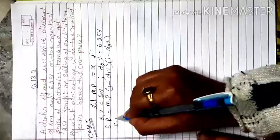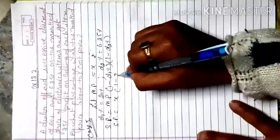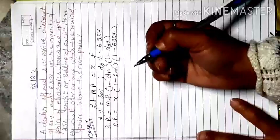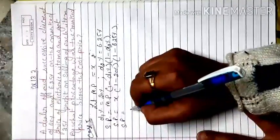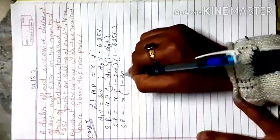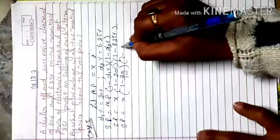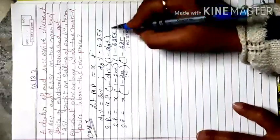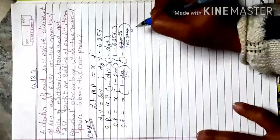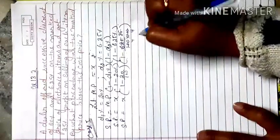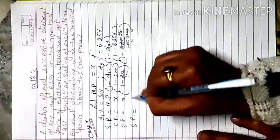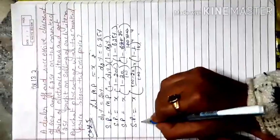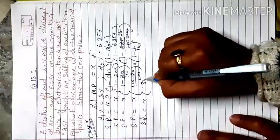Applying the values with mark price as x: SP = x × (1 − 20/100) × (1 − 6.25/100). Removing the decimal, 6.25% becomes 25/400, which simplifies to 1/16. Taking LCM: SP = x × (80/100) × (1 − 1/16) = x × (80/100) × (15/16).